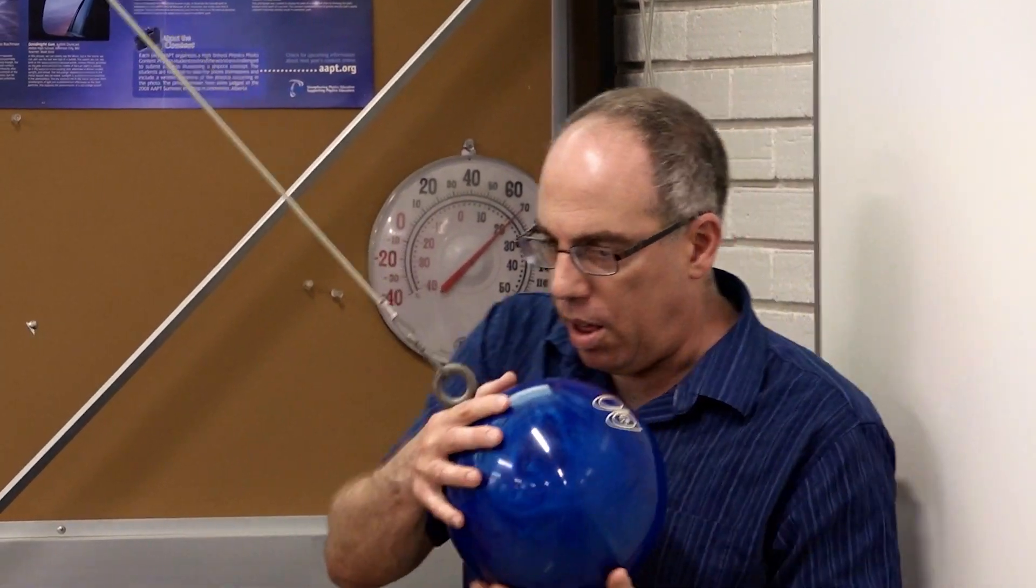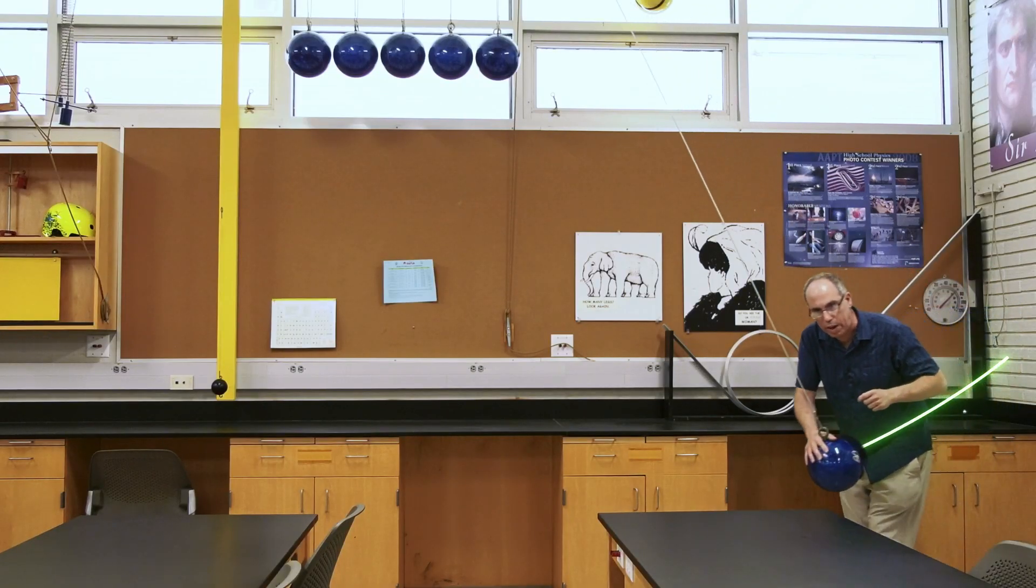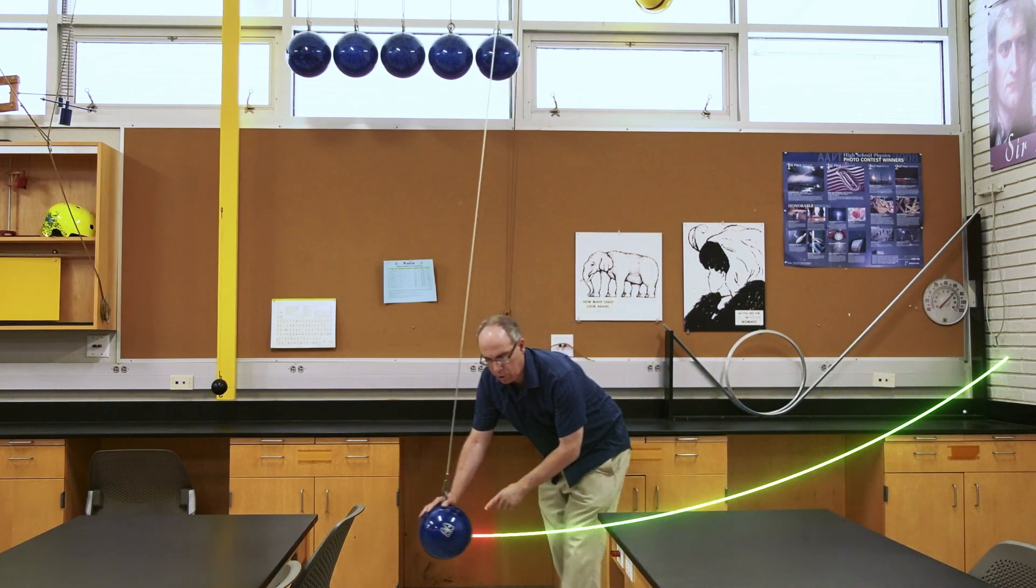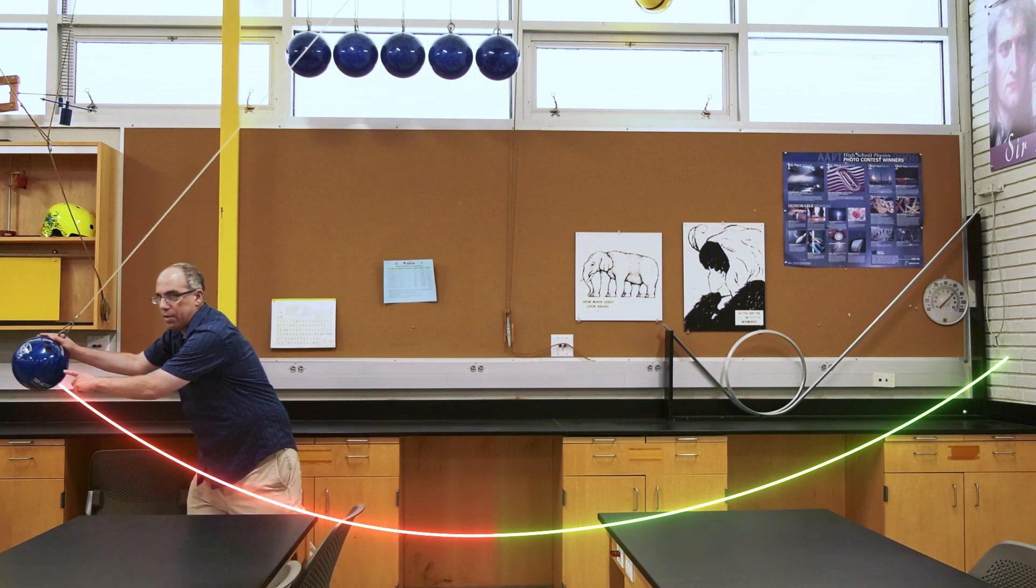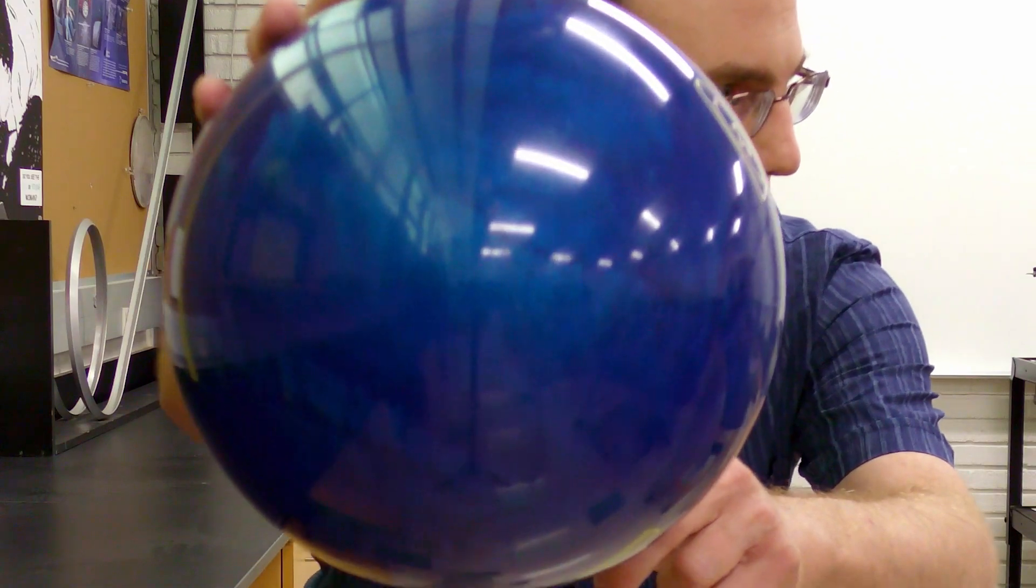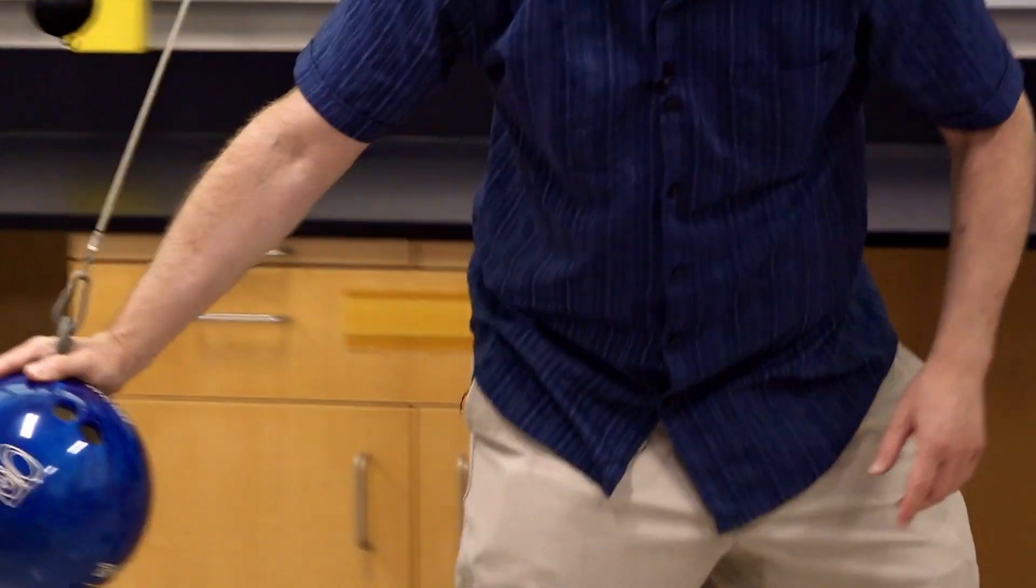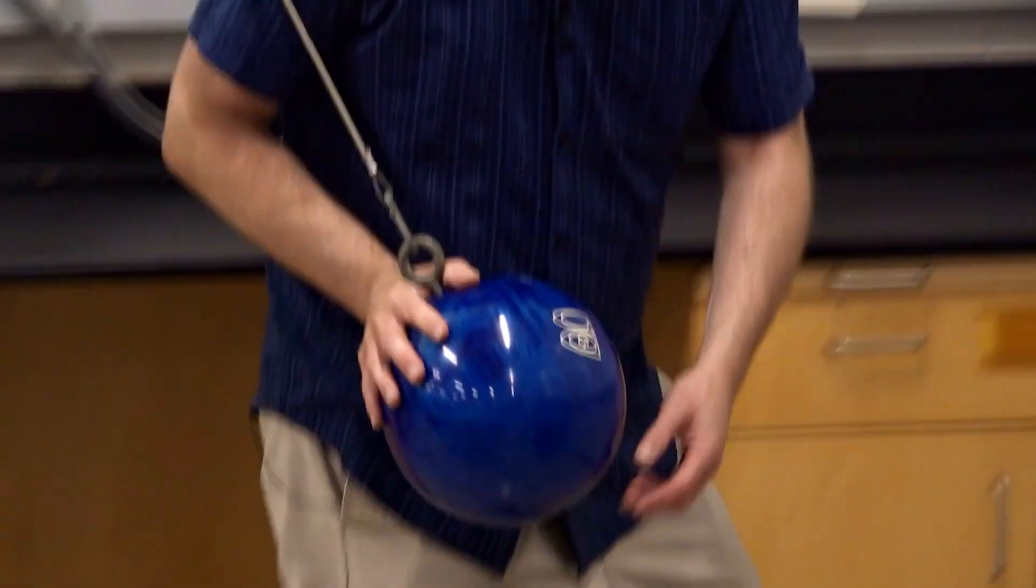After I release the bowling ball, when the bowling ball is on the way down gravity will be doing positive work, and then on the way up gravity will do negative work, and then on the backswing more positive work followed by more negative work.